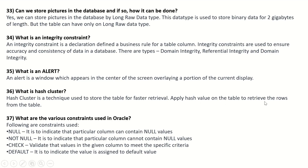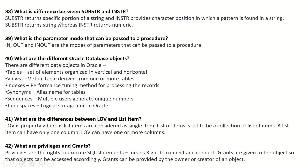What are the various constraints used in Oracle? NULL — indicates that a particular column can contain null values. NOT NULL — indicates a column cannot contain null values. CHECK — validates the values in a given column to meet specific criteria. DEFAULT — indicates values assigned to a default value. What is the difference between SUBSTR and INSTR? SUBSTR returns a specific portion of a string. INSTR provides the character position in which a pattern is found in a string. SUBSTR returns a string whereas INSTR returns a numeric value.